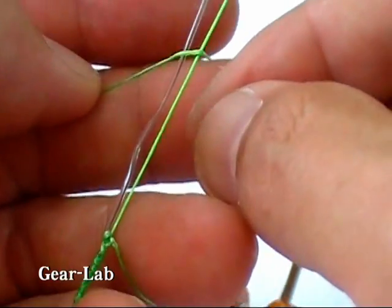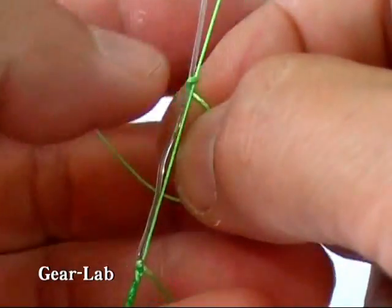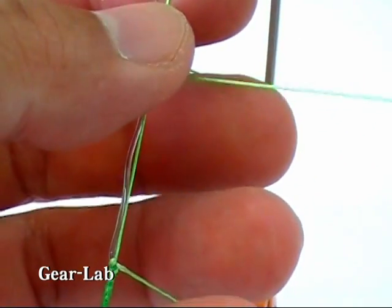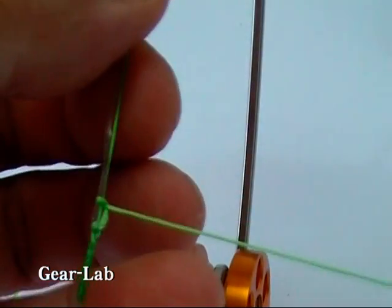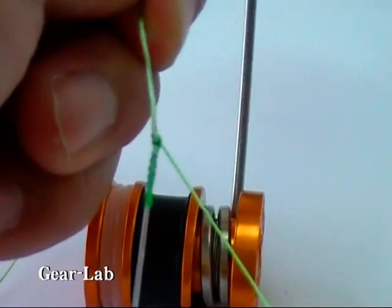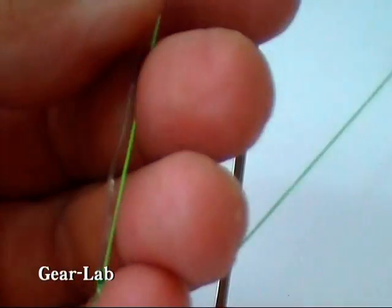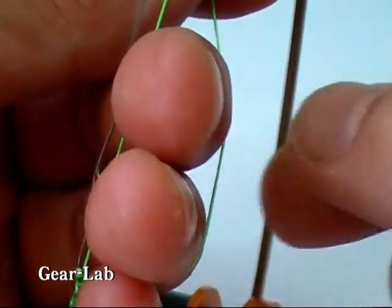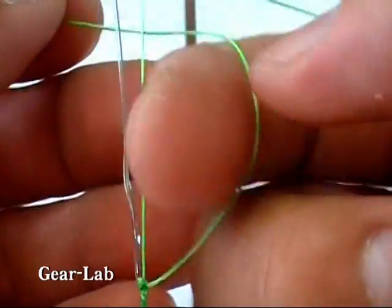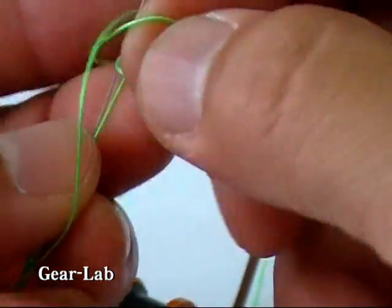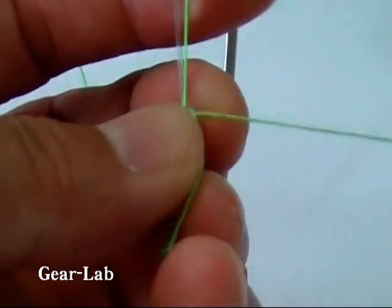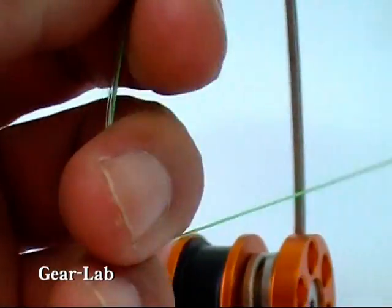This is a half hitch. Take the line from above and pass it through this loop and pull. Next, take the line from below and thread it through this loop. This is the second knot.